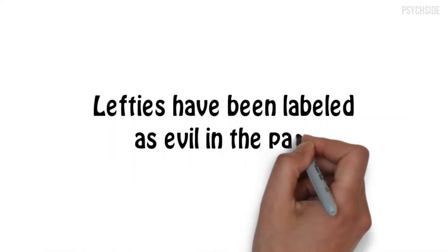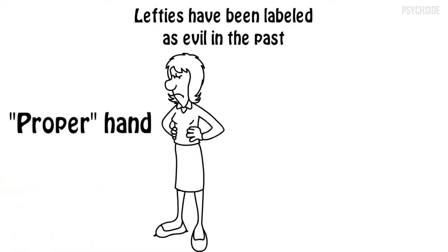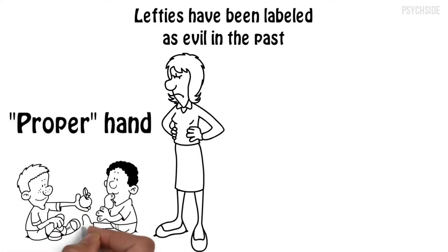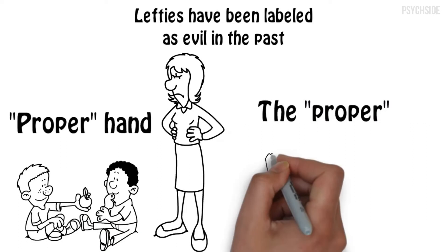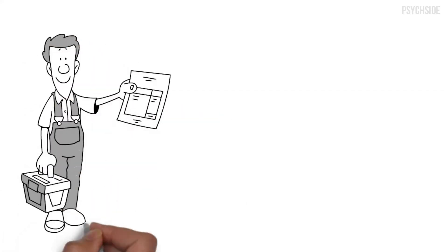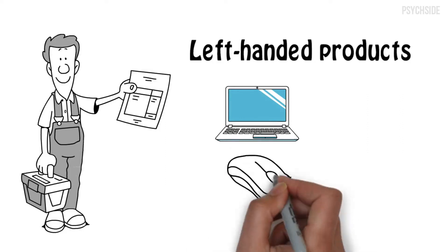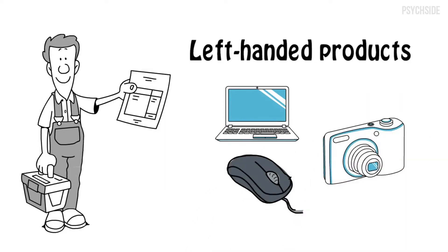Lefties have been labeled as evil in the past. Many parents force children to use their proper hand if they watch their child use their left hand. The proper meaning their right hand, which is viewed as the correct hand. However, the world has gotten progressively more accepting of left-handed folk. Luckily, there are now more manufacturers who make special left-handed versions of many items.